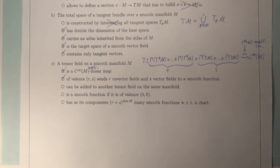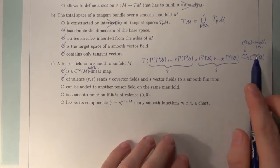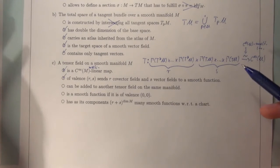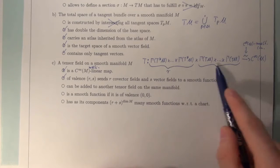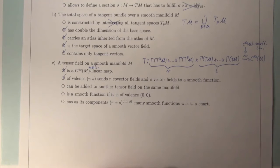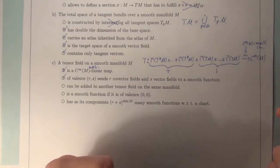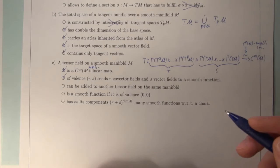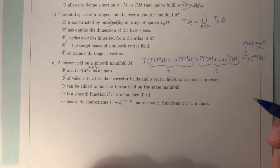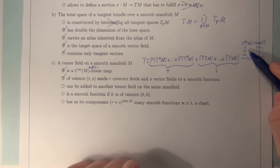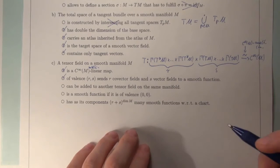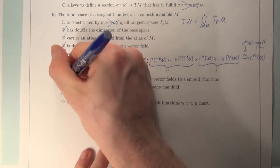A tensor field on a smooth manifold M can be added to another tensor field on the same manifold. Of course, in order to talk about multilinearity, we need a notion of addition, which we can establish point-wise. At one point we have ordinary tensor spaces where we can add, subtract, and multiply by scalars. This carries on to tensor fields, but you have to be careful: you can no longer divide by any function.